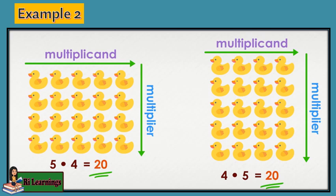Example 2: 5 columns in the multiplicand, 4 rows in the multiplier. 5 times 4 equals 20. Now reversing the order of multiplication, we get 4 times 5 equals 20. The answer is the same even after changing the order of the numbers. Thus, the multiplication is commutative.